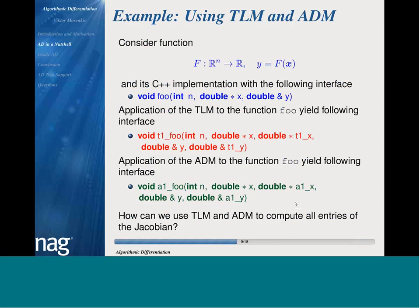Let us assume we have a scalar-valued vector function F that computes Y equals F of X, implemented in C++ by the function foo with arguments N, X, and Y. N is the size of the input dimension, X is the input, and Y is the output. If we apply the tangent linear model to function foo, we get the function T1_foo with arguments X, T1X, Y, and T1Y, where X and T1X are inputs. The function computes the function value stored in Y and the directional derivative of F in direction T1X stored in T1Y.